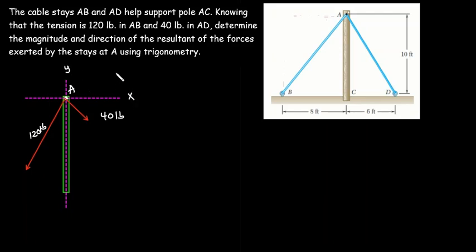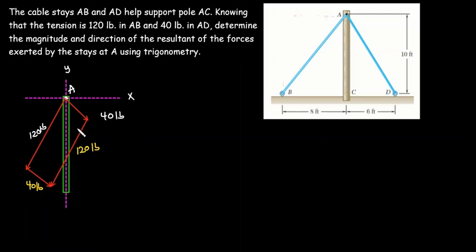This is my x-axis and this is my y-axis. I'm going to draw another force vector parallel to the 120 pounds force, and another parallel to the 40 pounds force. So this also becomes 120 pounds and this also becomes 40 pounds. I will draw a force vector from the tails of the two forces to the point where the heads meet — the magnitude of this line becomes the magnitude of the resultant force R.